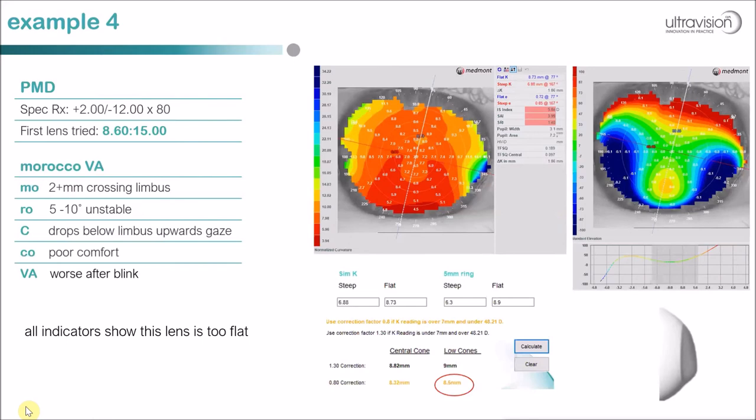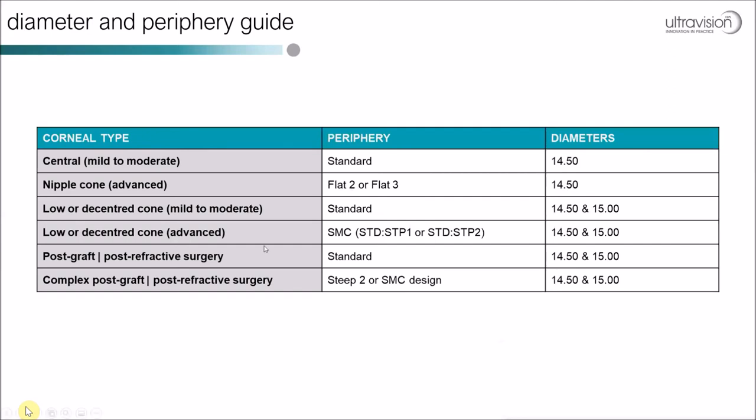The diameter guide summarises: central to mild-to-moderate cones use 14.5mm; nipple cone and advanced use flat 2 or flat 3 periphery at 14.5mm; lower descent cones use 14.5 to 15mm; SMC cases combine SMC with 15mm or the two together. For low cones, post-refractive surgery, and post-graft — if you need to tighten the lens, go to 15mm. Central and nipple cones stay at 14.5mm.